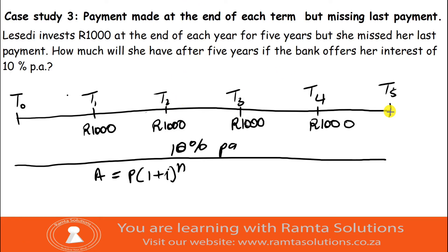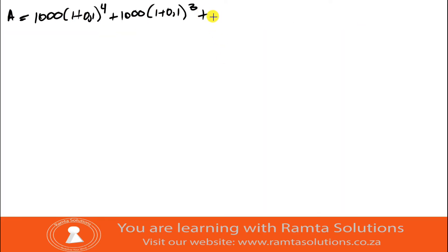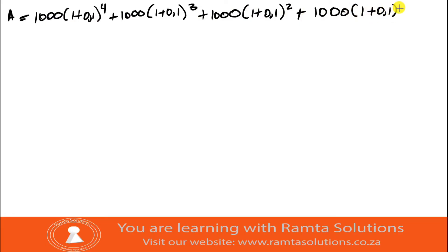The third deposit is in the account for two years, and the fourth deposit is in for just one year. So we have: 1000 × (1.1 + 1.1² + 1.1³ + 1.1⁴). Now take your calculator and find the total.